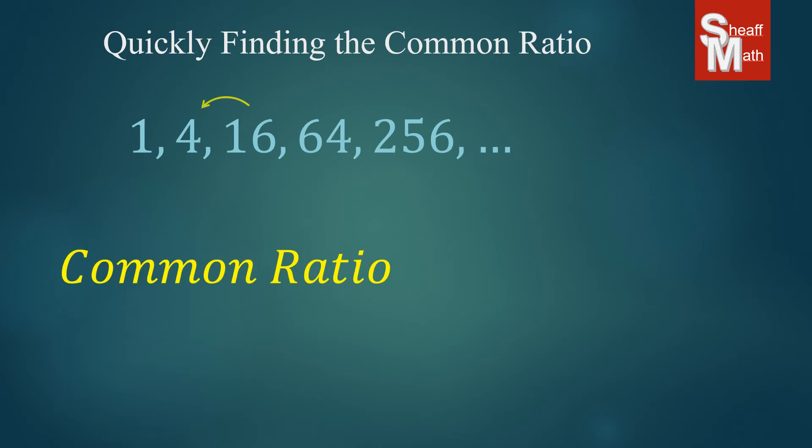And so I'm going to pick just two random numbers, 16 and 4. Now I should have probably picked 4 and 1 because they're the easier ones. But I just want you to know that it doesn't matter which one pair you pick. When you take the number and divide it by the one before it, you're going to get that common ratio. And you really only need to do one in order to find it.